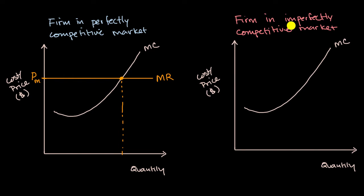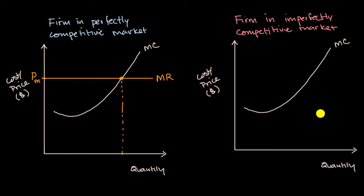Now let's think about how things are a bit different for a firm in an imperfectly competitive market. In a previous video, we talked about how in an imperfectly competitive market, there's some differentiation amongst the various players who are competing. Their market price is a function of quantity — if they just produce a bunch of their product, the price they get in the market is likely to go down. So they will have their own firm-specific demand curve, maybe looking something like this.